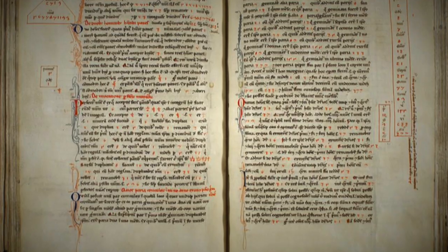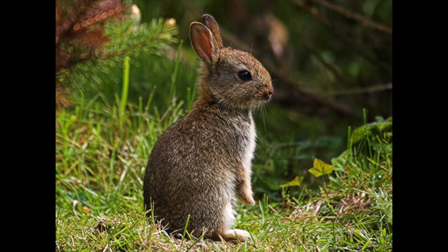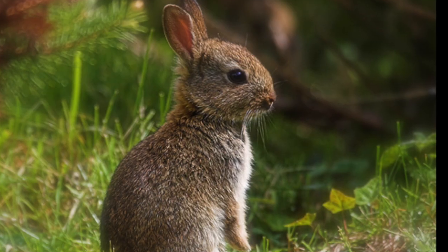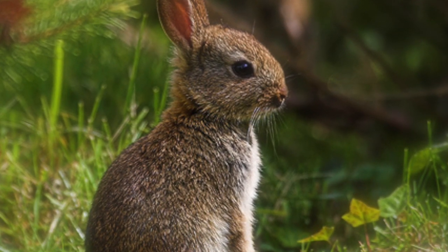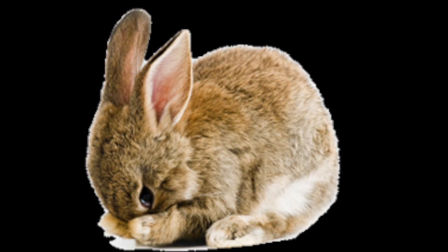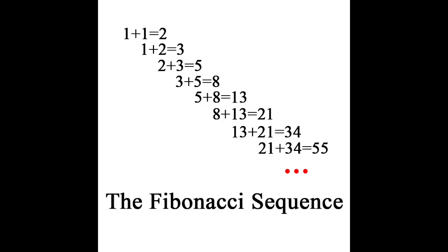In Liber Abaci, Fibonacci presented and solved a problem about the reproduction of rabbits under unsophisticated circumstances. The problem was that one rabbit plus another rabbit equals two. One plus two equals three, and two plus three equals five, and so forth. This is known as the Fibonacci sequence.